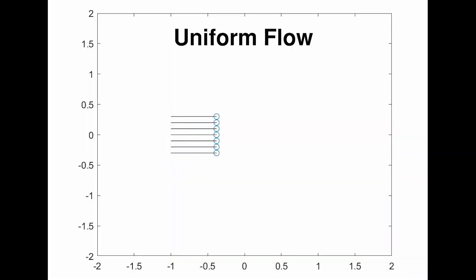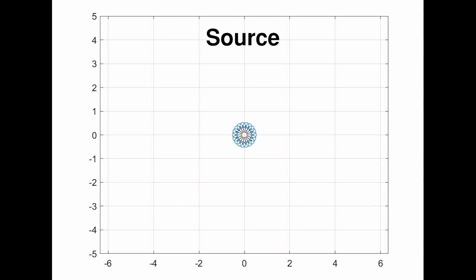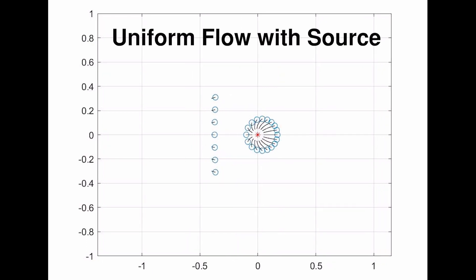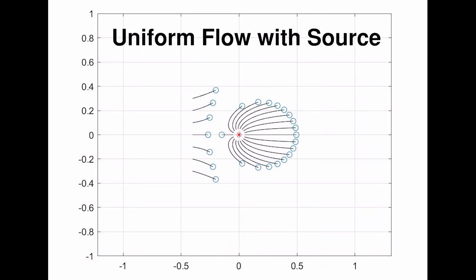Let's consider a fluid flowing from left to right. Now imagine a fountain suddenly springing up from the ground, otherwise known as a source of fluid. When you superimpose the uniform flow and the source flow, you see that the fluid particles are already adjusting their course.